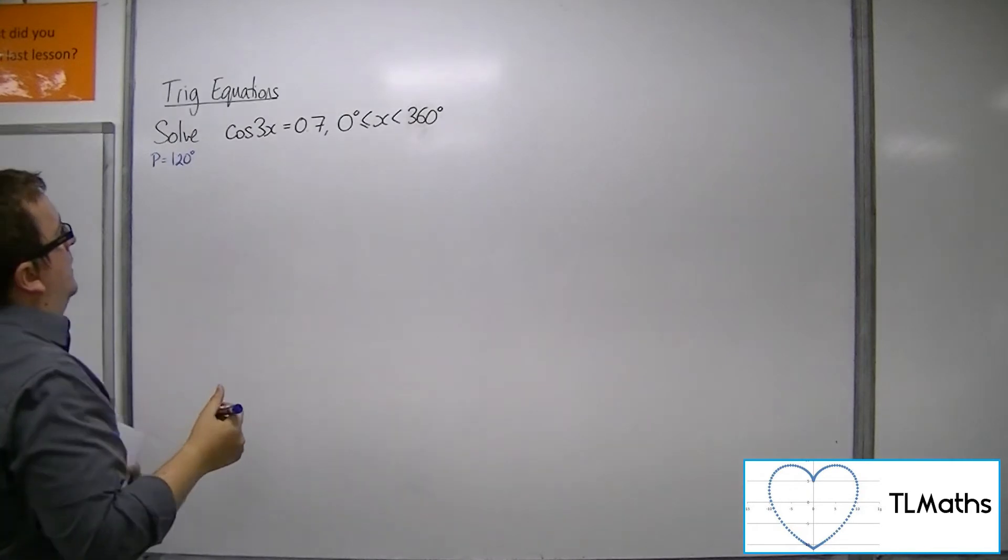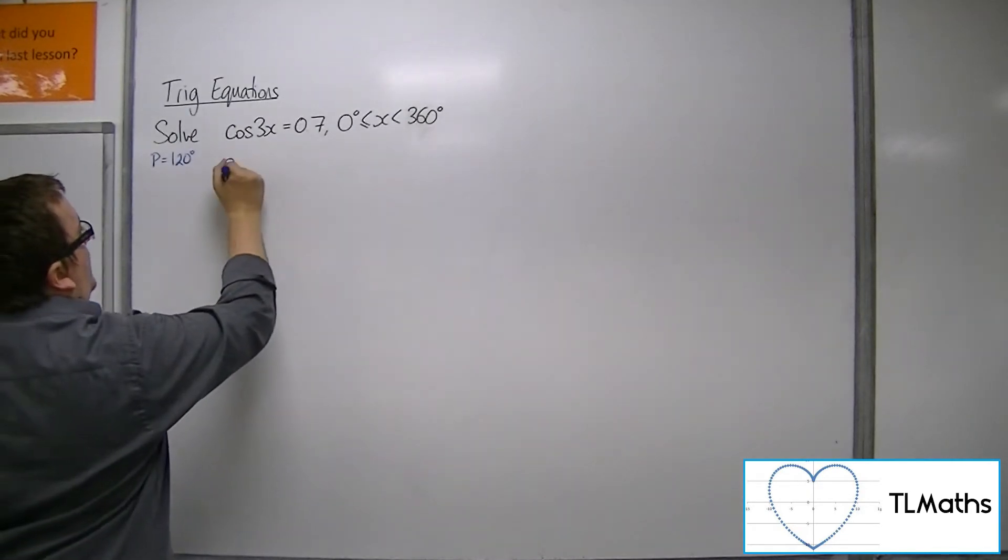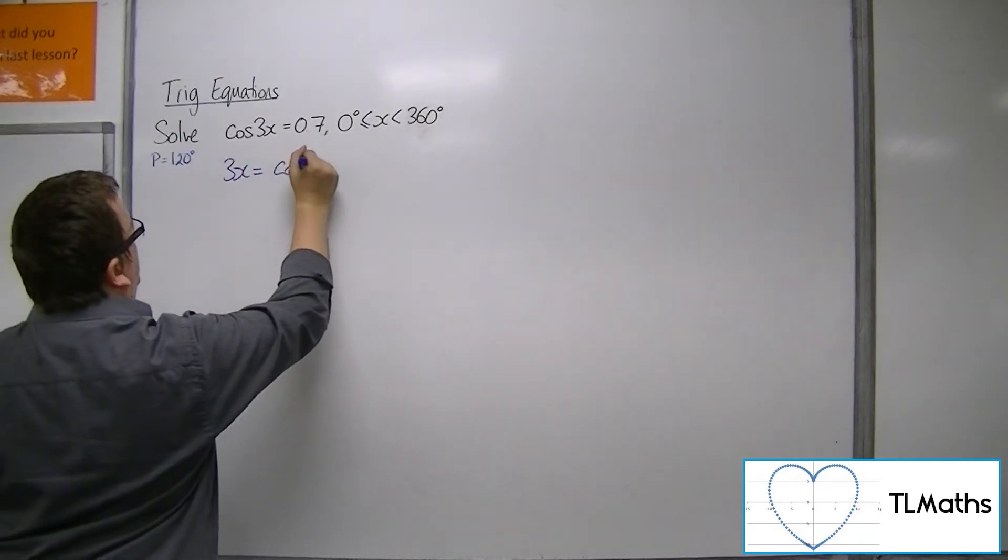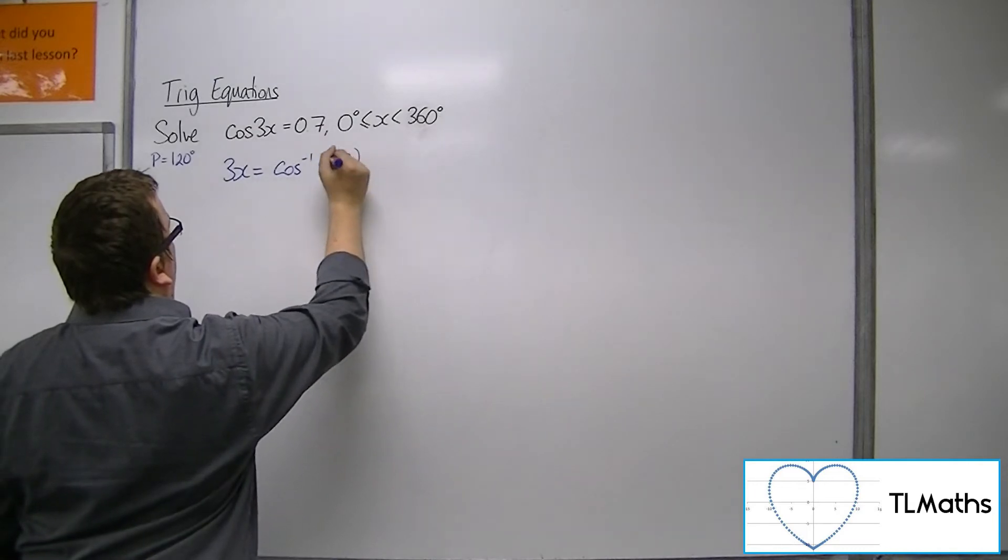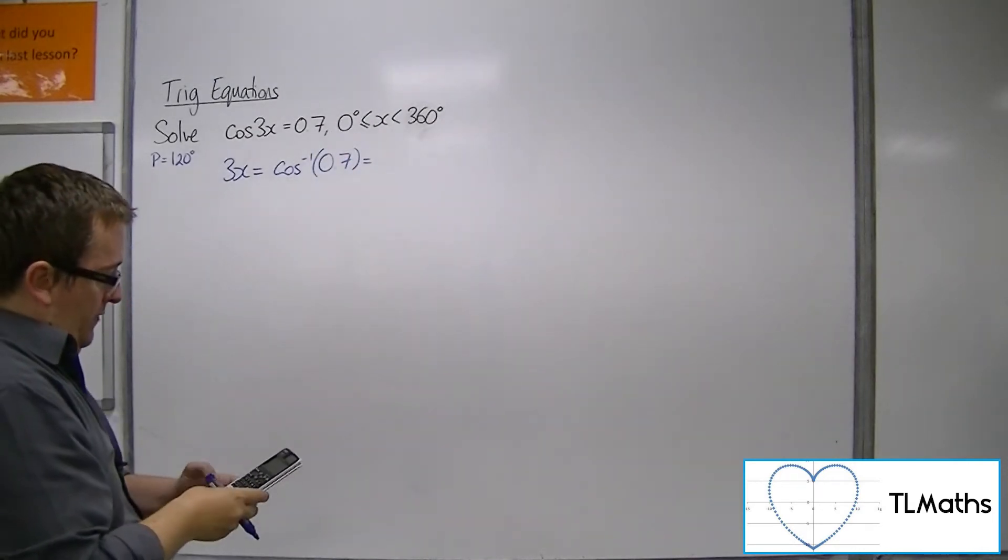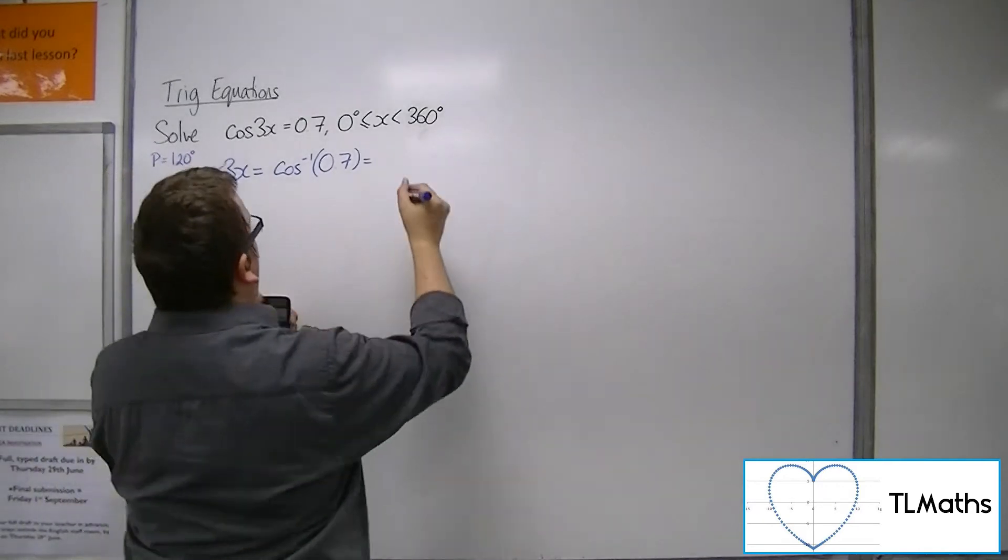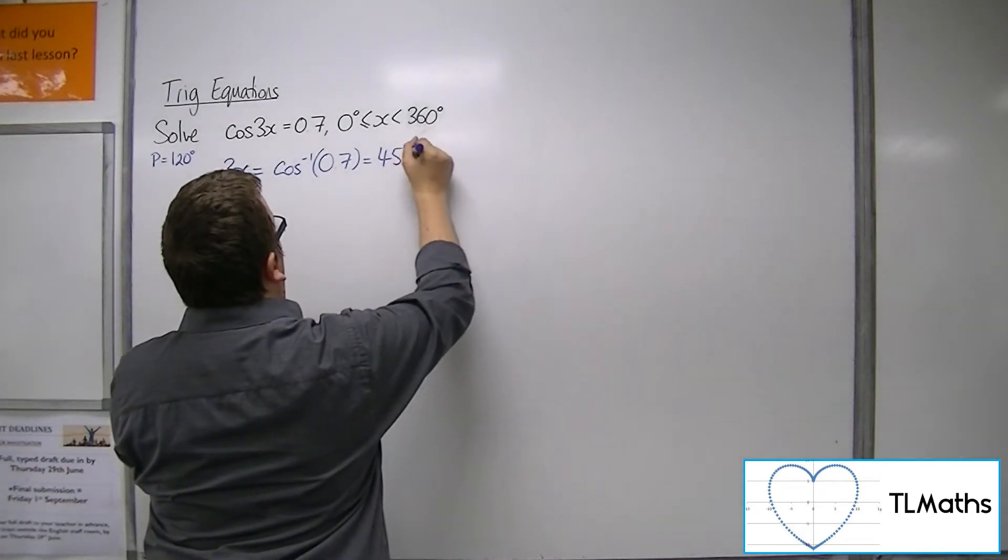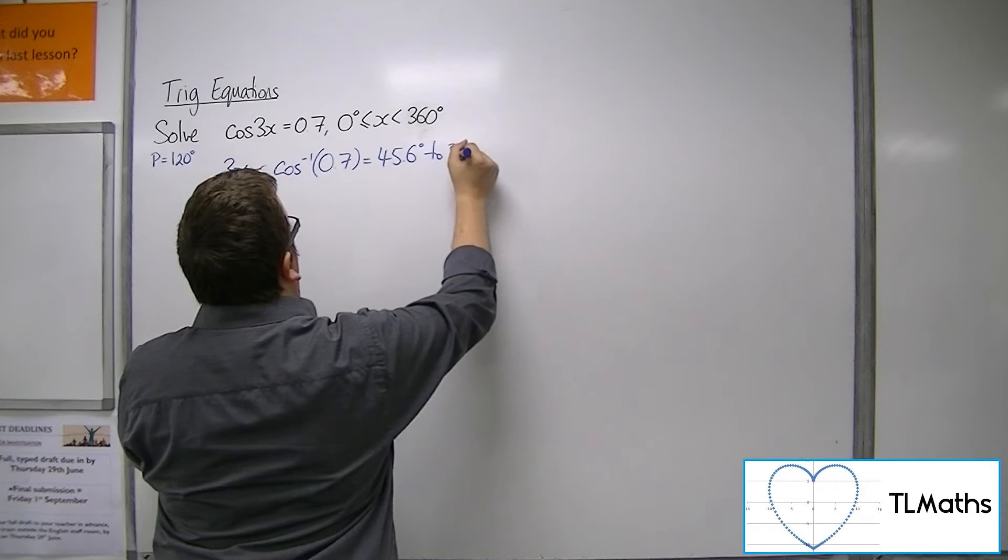Okay, so if I inverse cosine both sides, so inverse cosine of 0.7, I get 45.6 degrees to 3 sig fig.